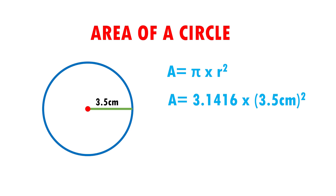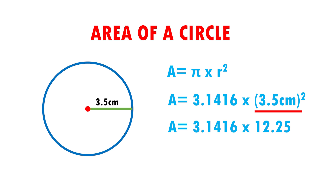First, I have to square. So A equals 3.1416, and 3.5 times 3.5 gives me 12.25, and centimeter times centimeter gives me centimeters squared.